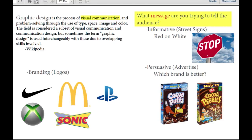Then the other thing is branding, such as logos. Some logos have the actual words in them, like Sonic, and others don't even need the name anymore. Like this — obviously it's an Xbox. More specifically, that one looks like an Xbox 360. And this one's just PlayStation. And then of course McDonald's and the Nike Swoosh.